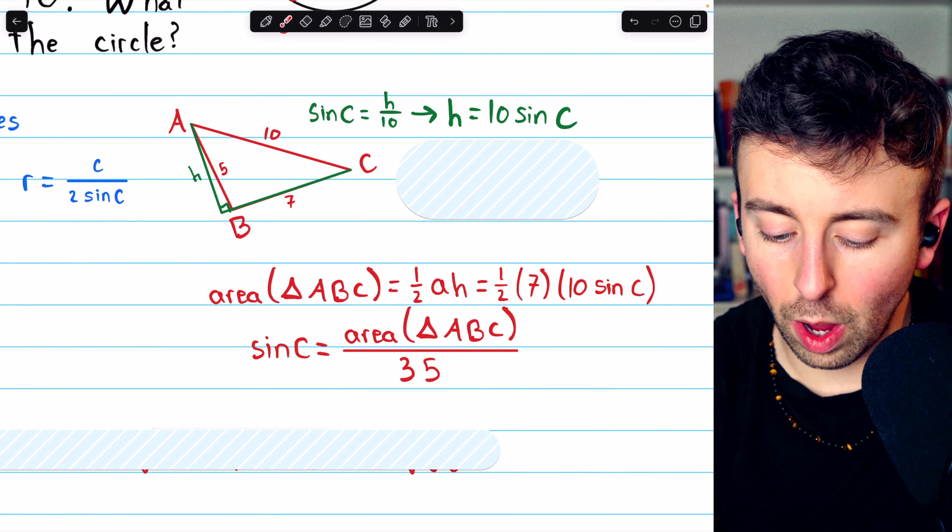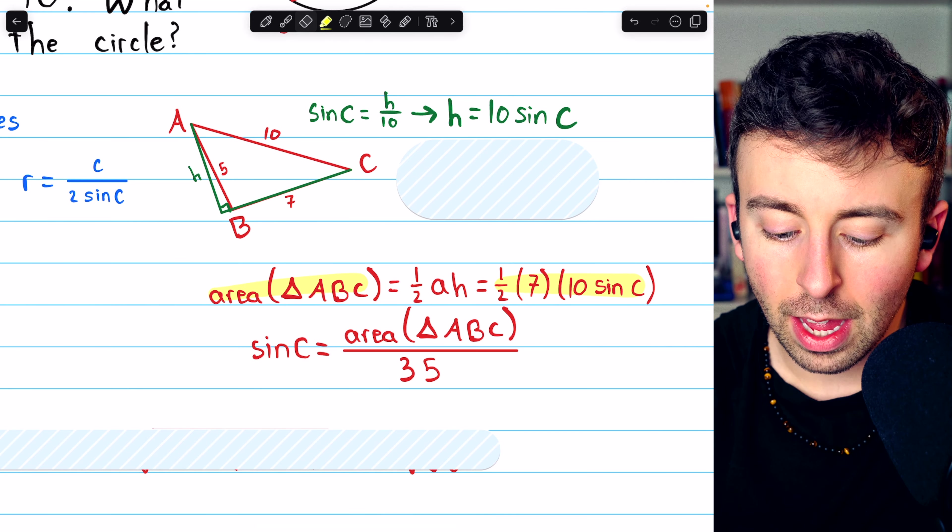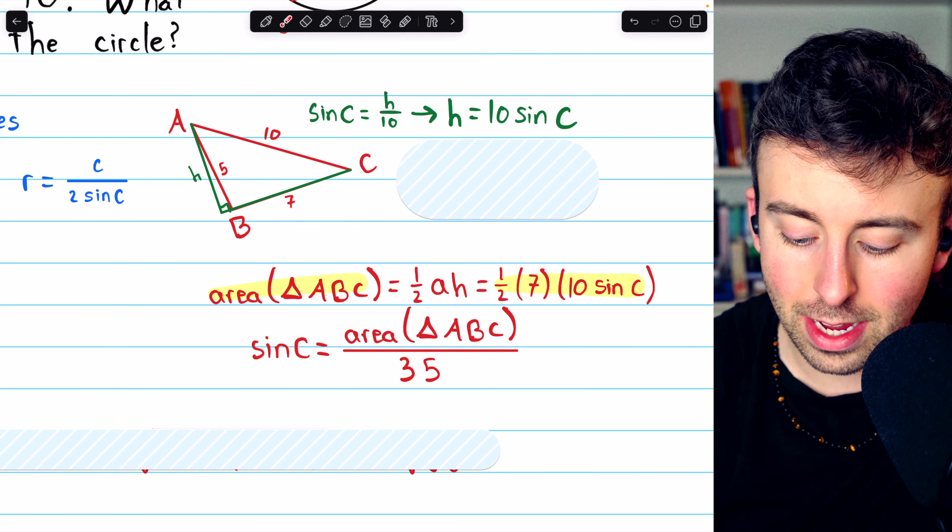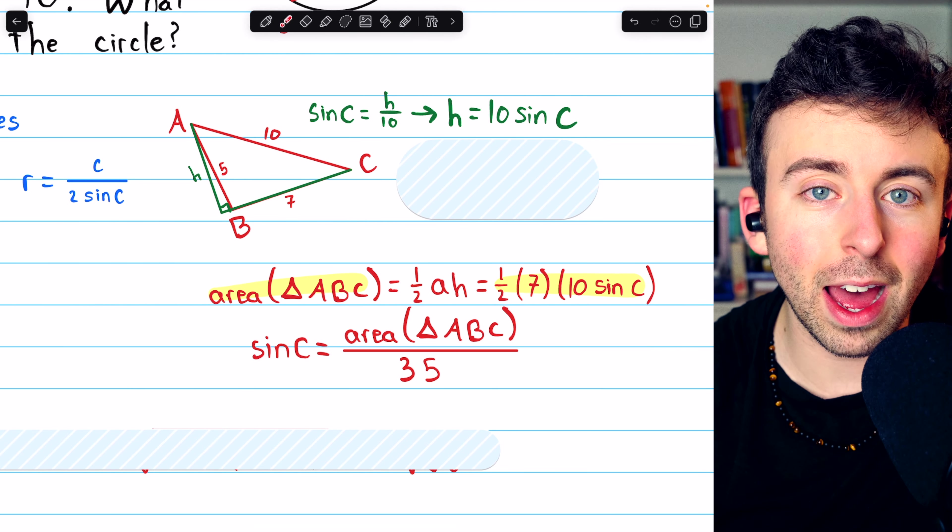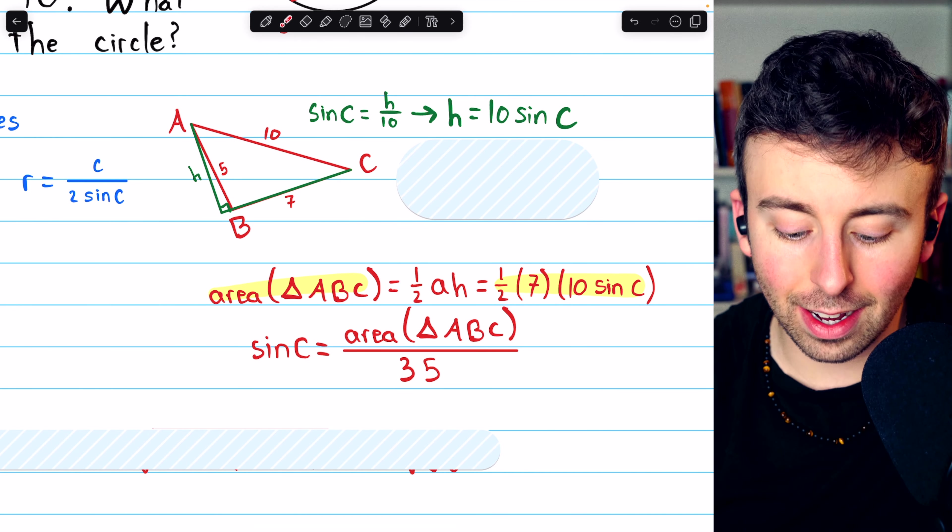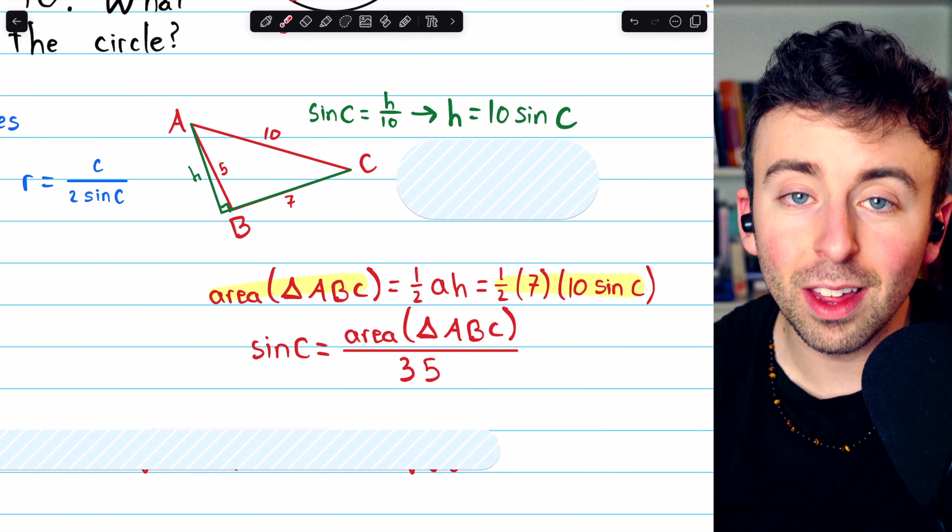Thus, what is sine C? Well, we can just solve this equation for sine C. 7 times 10 is 70, multiplied by 1 half is 35. So just divide both sides by 35, and sine C is the area of the triangle divided by 35.